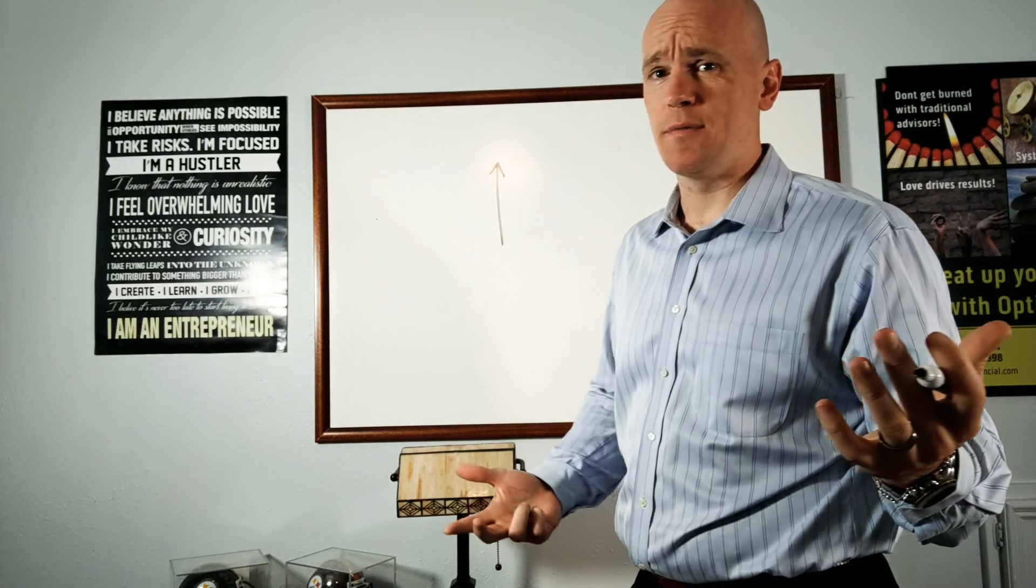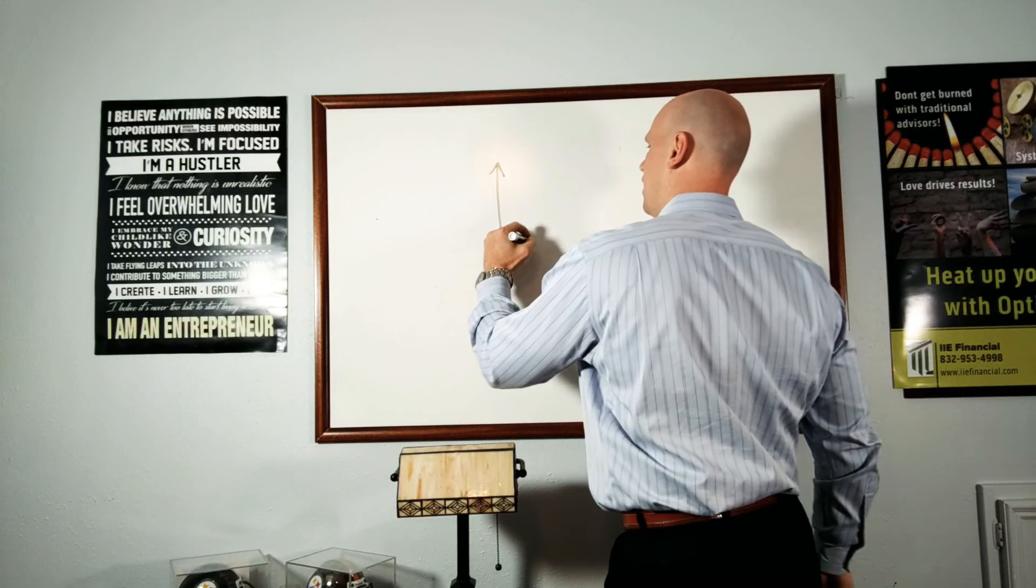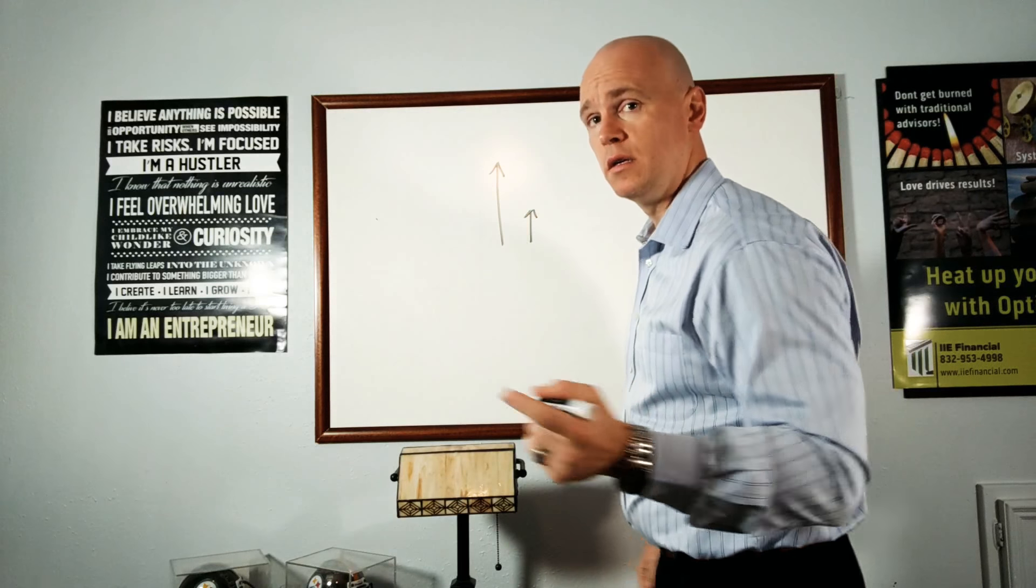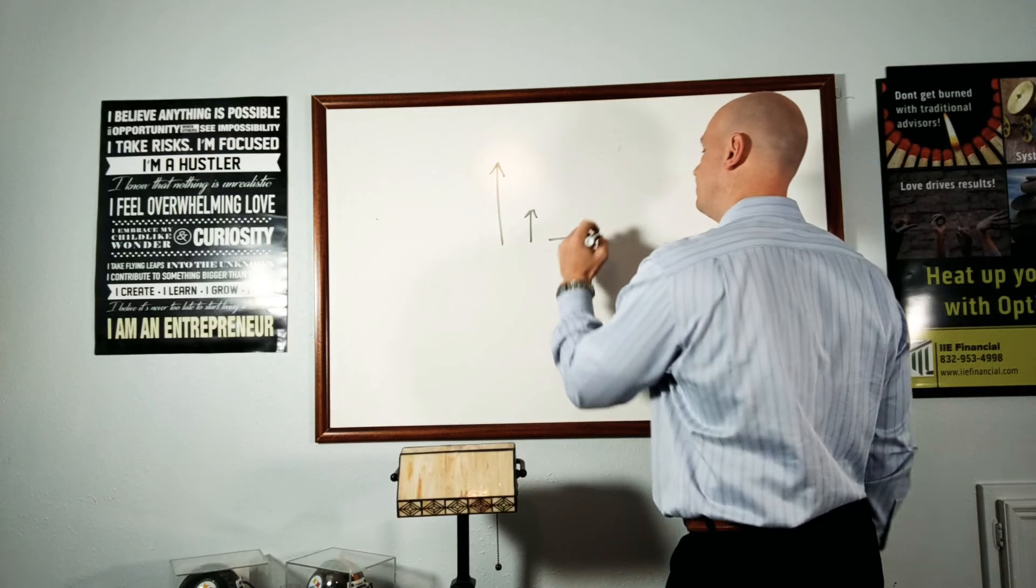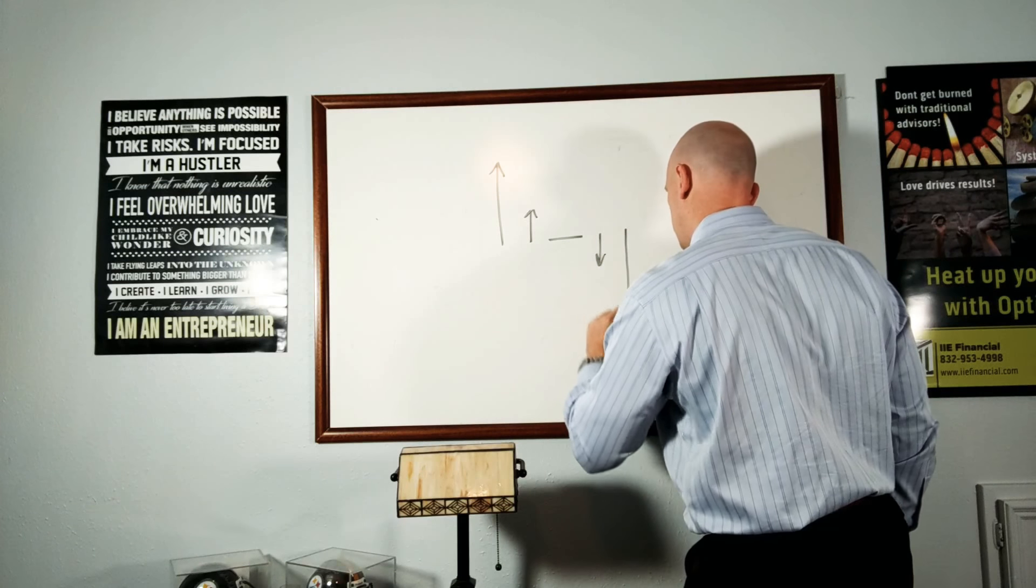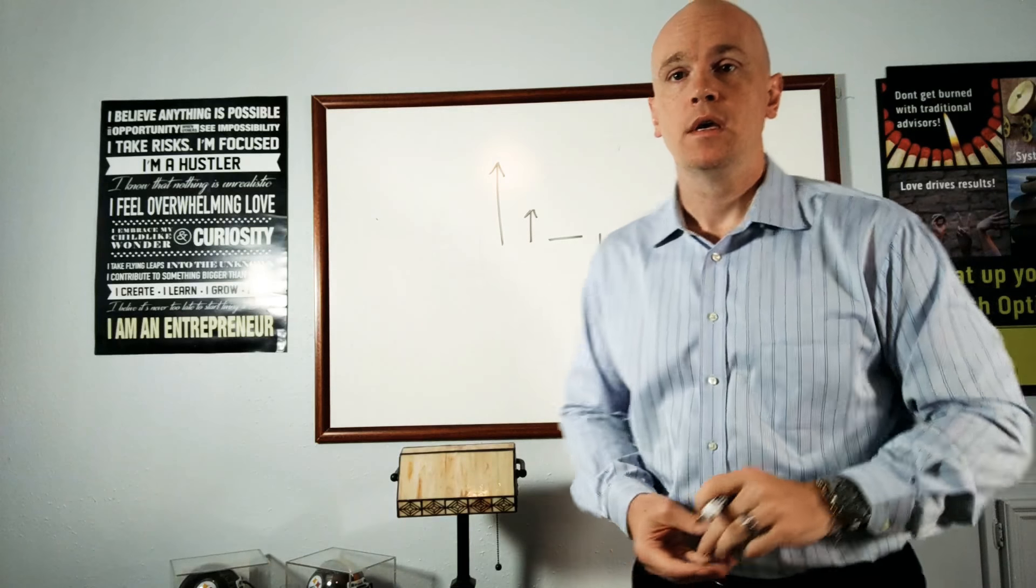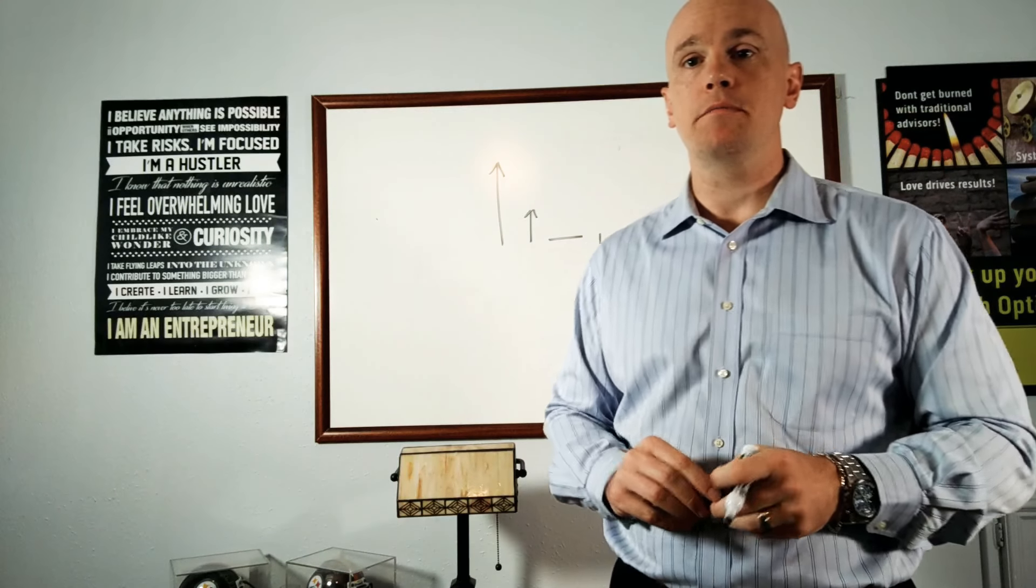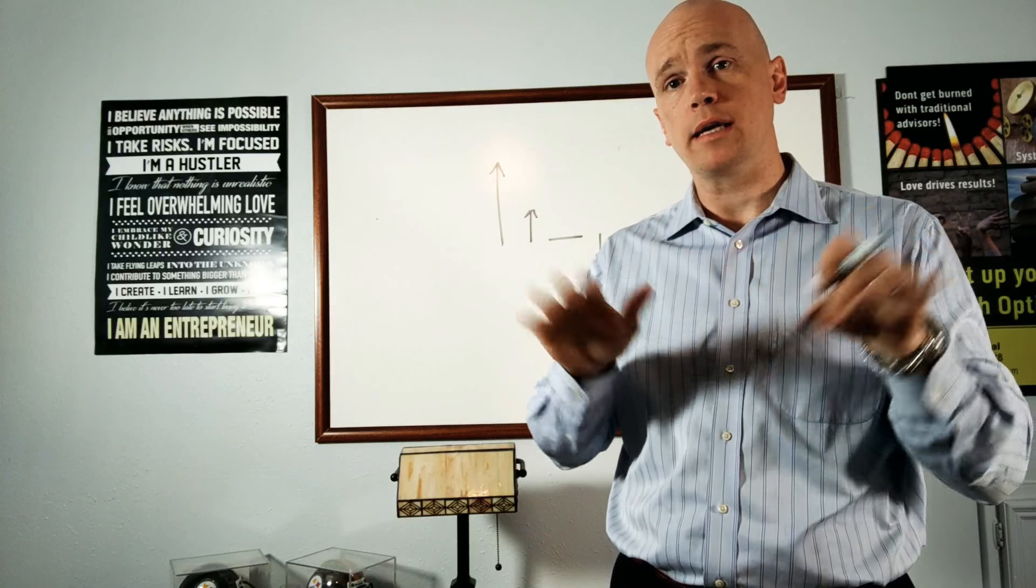A big winner, which everybody loves, right? A small winner, break-even, small loser, big loser. Those are your five basic outcomes. Big winner, big loser, small winner, small loser, break-even.